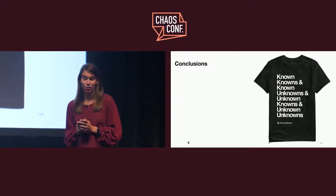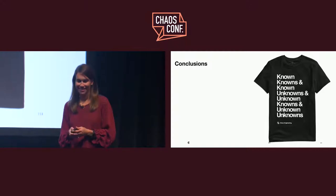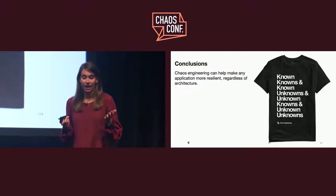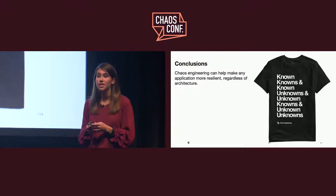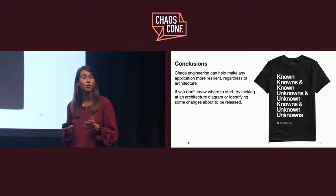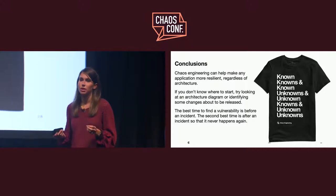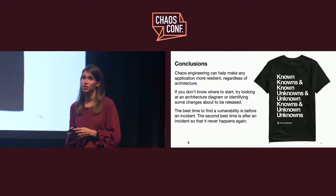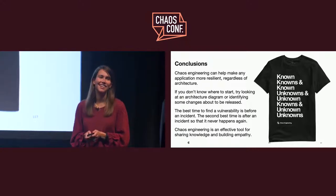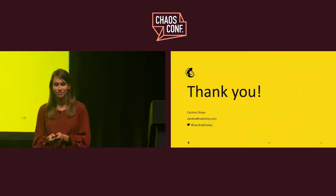I'd like to wrap this presentation up by reviewing the takeaways. First, chaos engineering can help make any application more resilient regardless of architecture — you can and should chaos test a monolith. If you don't know where to start, try looking at an architecture diagram or identifying changes about to be rolled out. The best time to find a vulnerability is always before the incident happens, but if that's not possible, recreating it after the incident is a great way to make sure you never see that incident again. And chaos engineering is an effective tool for sharing knowledge and building empathy. Thank you.